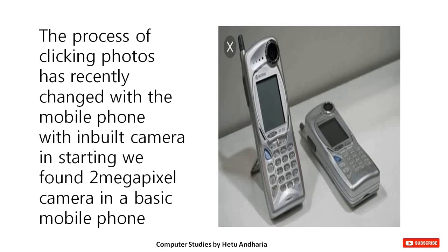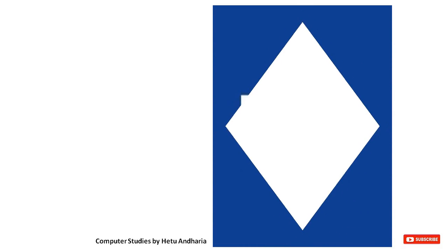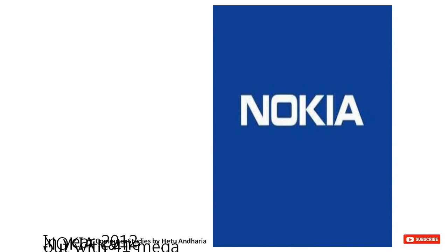We had a rear camera with a clarity of 2 megapixels. Then in the year 2012, Nokia came out with a 41 megapixel camera with a resolution of 7728 x 5352 — a much sharper image than the previous one.